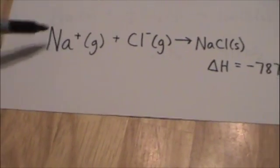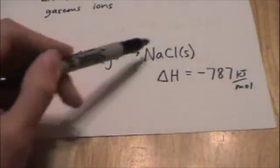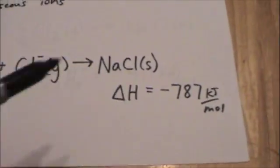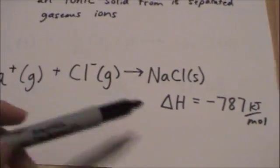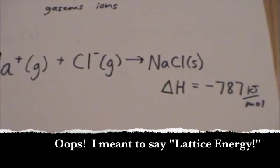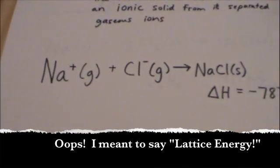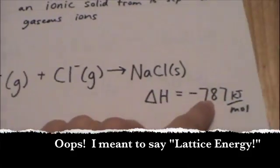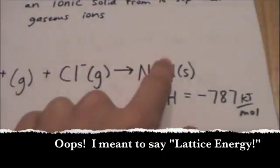You take the gaseous cation, the gaseous anion, form the solid ionic solid, and the delta H associated with that reaction is the lattice energy. It should be a negative value because you're going to release energy to form bonds — negative 787 kJ per mole.